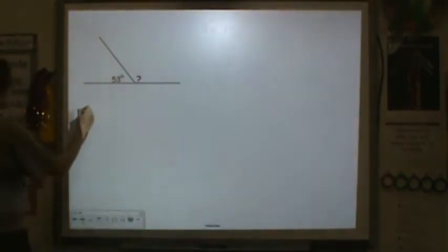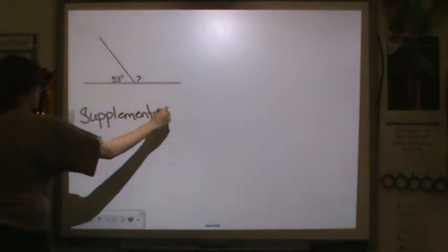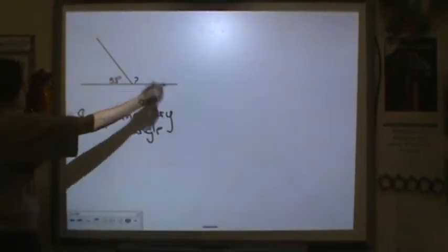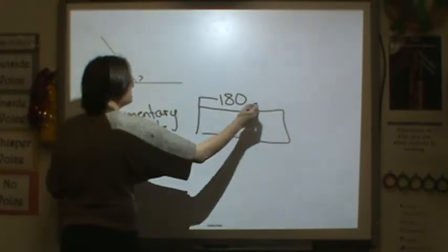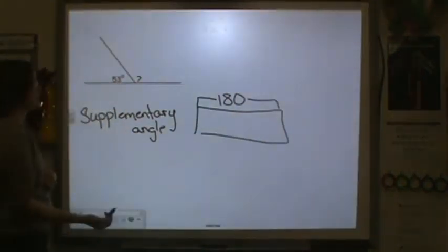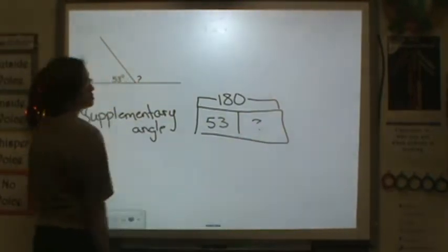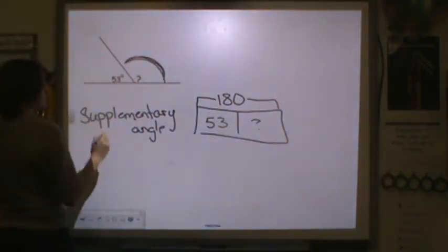Here we have another supplementary angle. So we're trying to find this piece. We know in a supplementary angle, the total is going to be 180 degrees, because it's a straight angle. That's the definition of it. So we have 53 plus question mark. So to find this missing part, this missing piece, we need to subtract to find out.